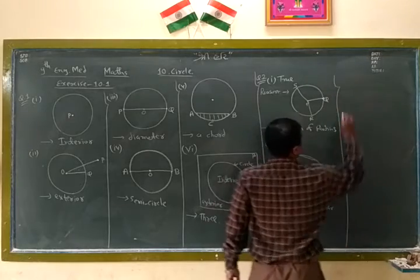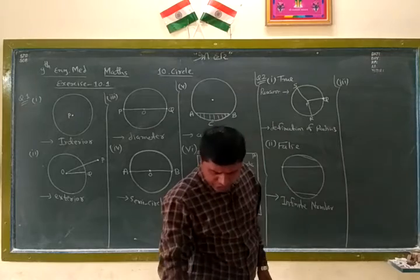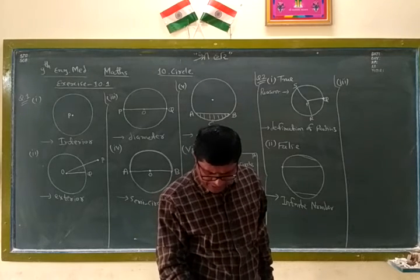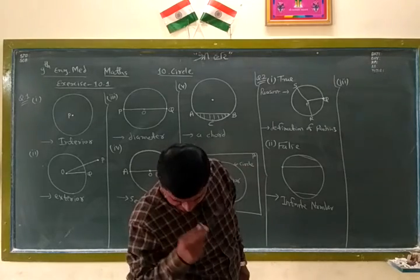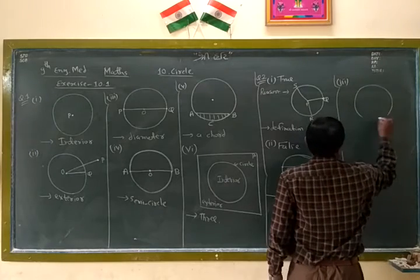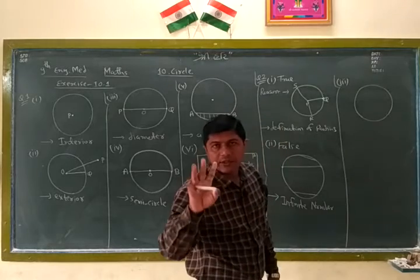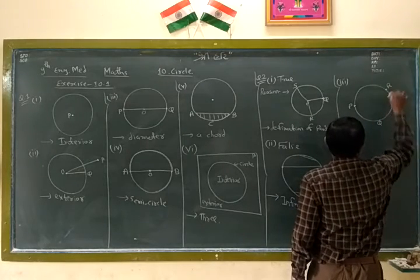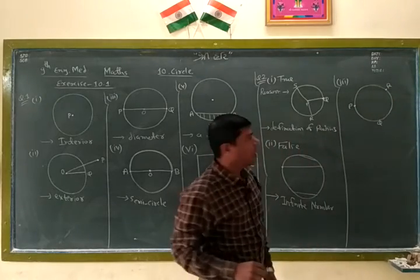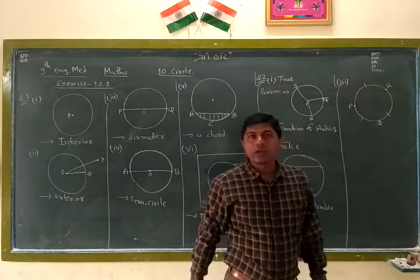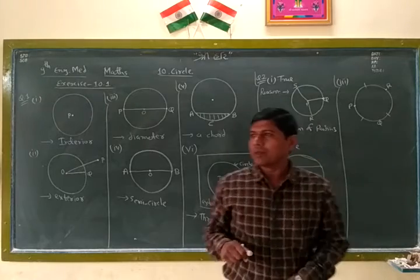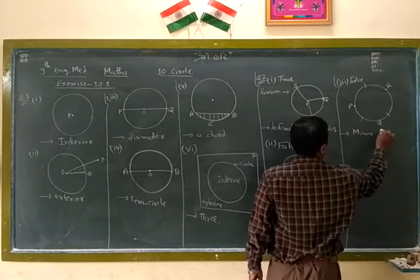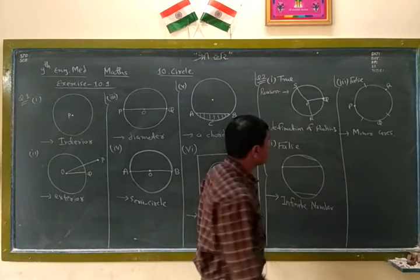Now, third one. Here, question be given. If a circle is divided into three equal arcs, it is a major arc. Dekhoi. Circle. Haa. This is circle. Divide three equal arcs. Suppose you taken here P, Q. One arc. Q, R. Second arc. R, P. Three arc. All are equal. This is, this is called, you are given major arc. Not a major arc. Minor arc. Because this is smaller part. Small part. So, false. What is the reason? Minor arc.